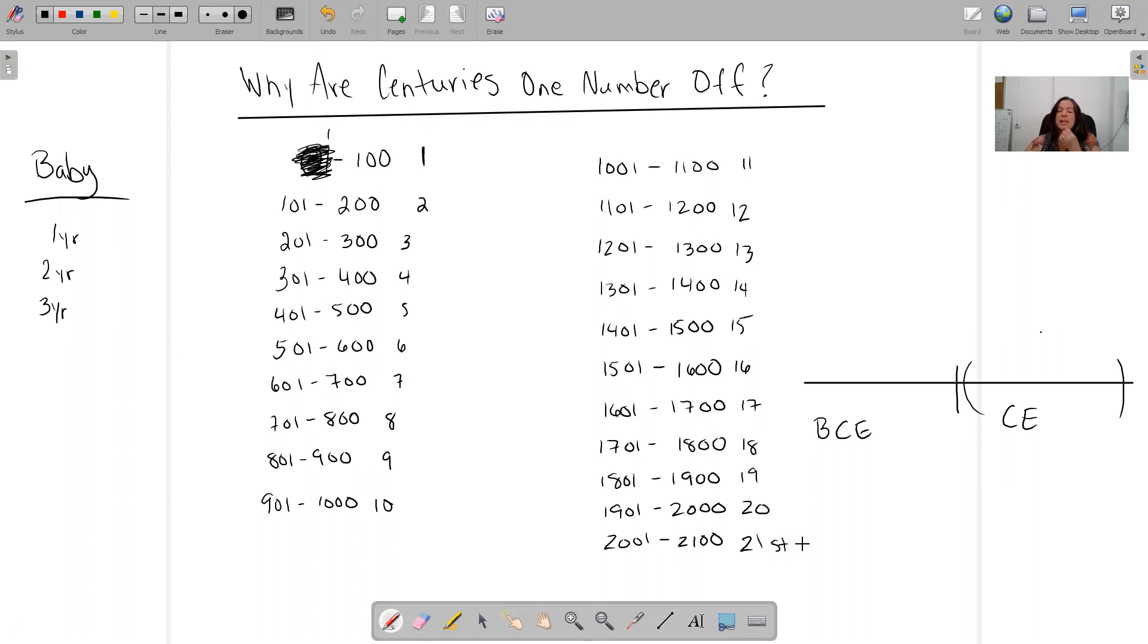So that means let's just randomly choose this century right here. That means that the year, anything in here, if we're saying the year, let's say 532, the year 532 CE is the sixth century.